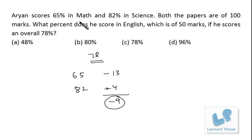Now from the third subject, he has to gain these 9 marks. So in English, the paper is of 50 marks, so to make 78% he should be having 39 marks in English.